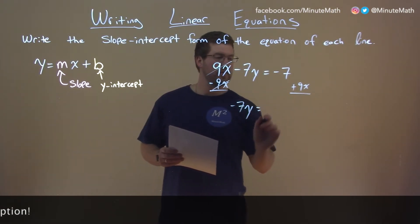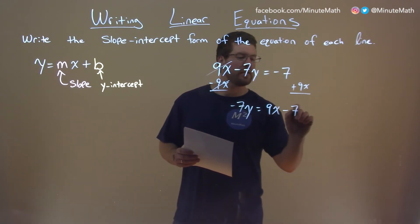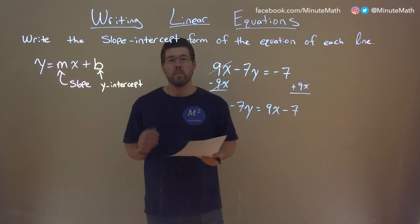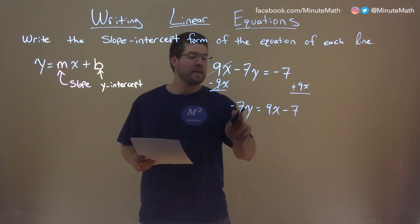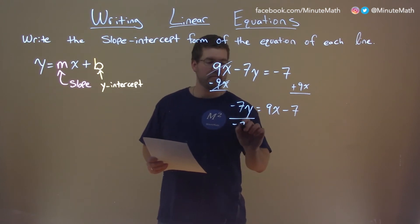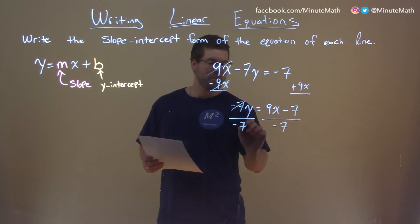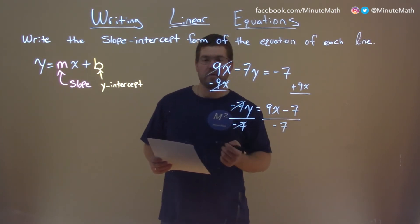Negative 7y here is equal to, let's write the 9x first, minus 7. Okay, almost there. We have negative 7y, that's multiplication. Divide both sides by negative 7. Remember, these cancel out and this negative 7 goes to both parts on the right.